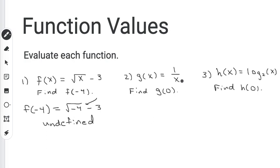x is always going to be in the bottom of the fraction. So this one is asking me to find g(0). So it's asking me to replace this x with a 0. So when I do that, I get g(0) is equal to 1 over 0. So I replace the x in the denominator with a 0.